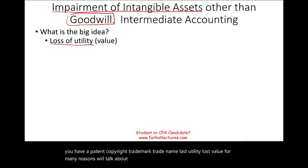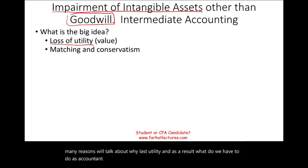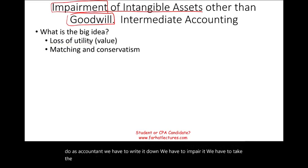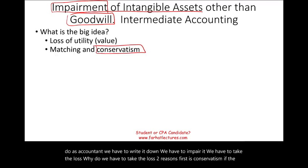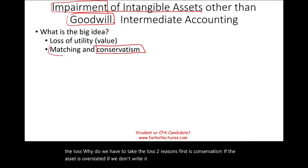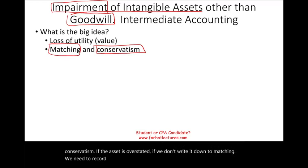When an asset loses utility, as accountants we have to write it down — we have to impair it and take the loss. Why? Two reasons: first, conservatism — the asset would be overstated if we don't write it down. Second, matching — we need to record the loss in the same period that the loss event took place.